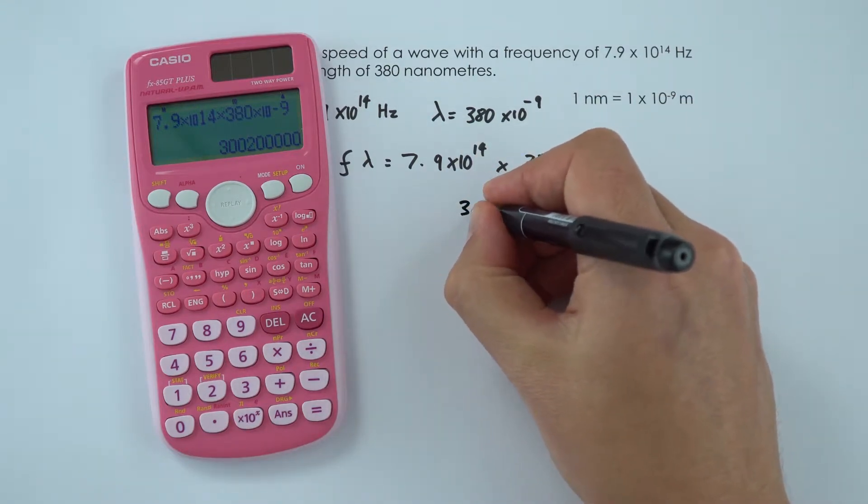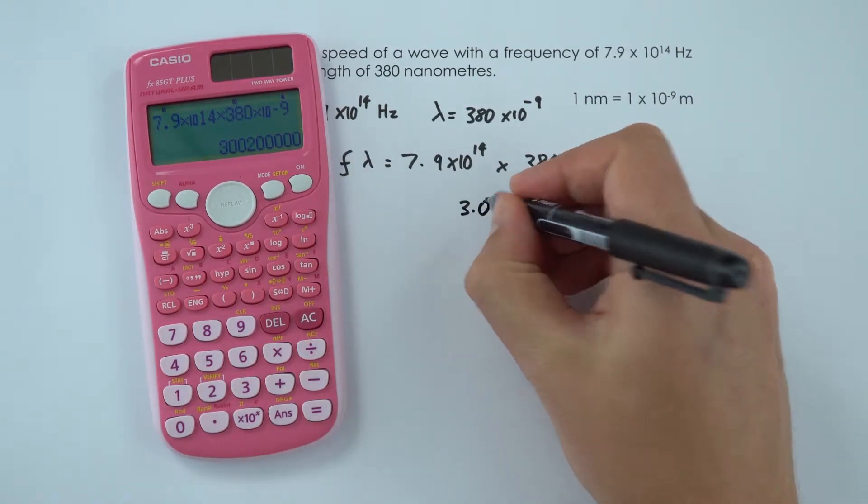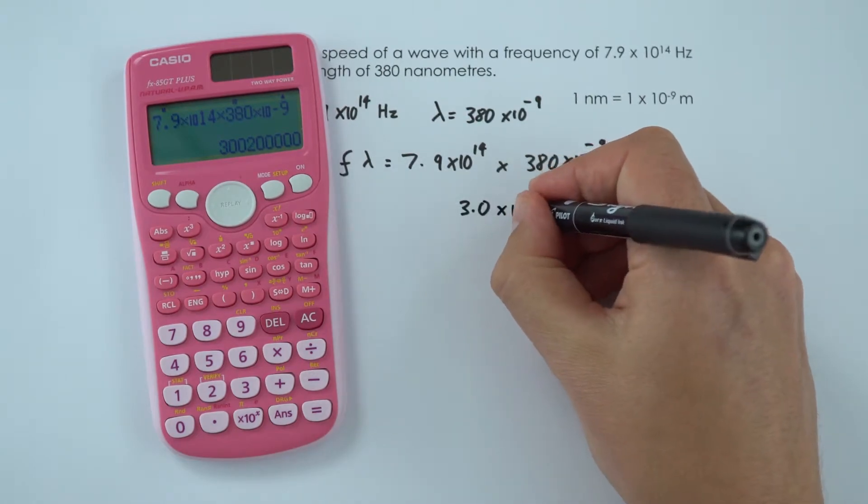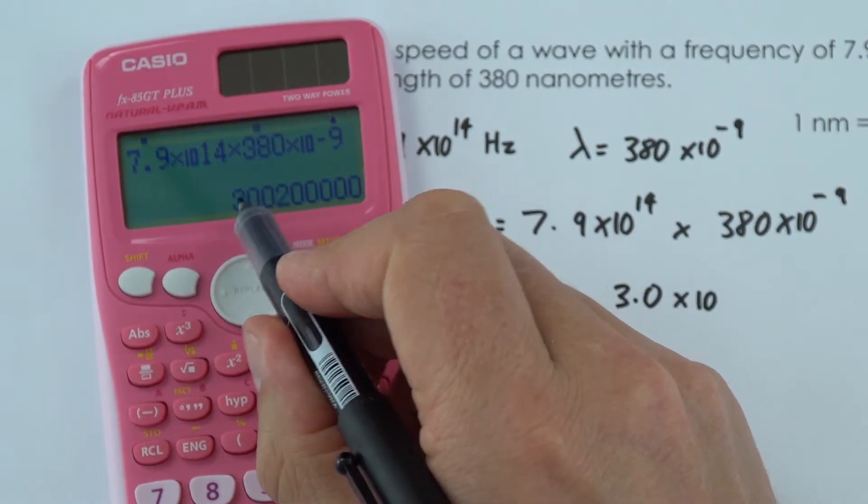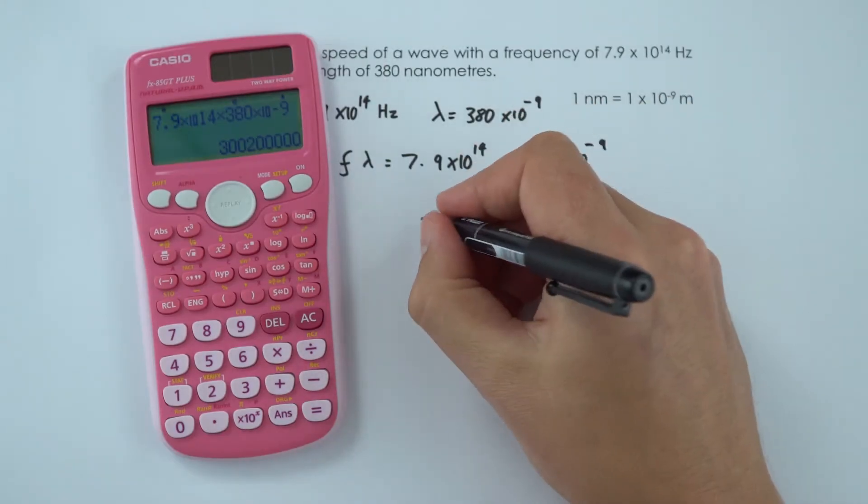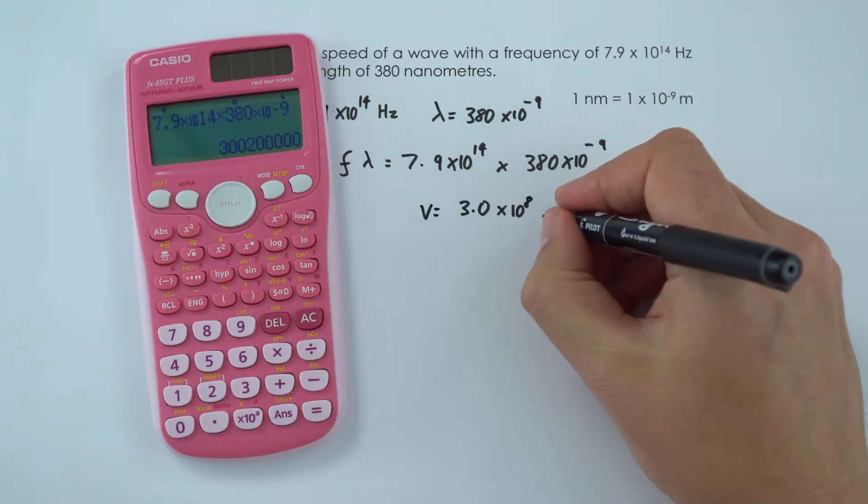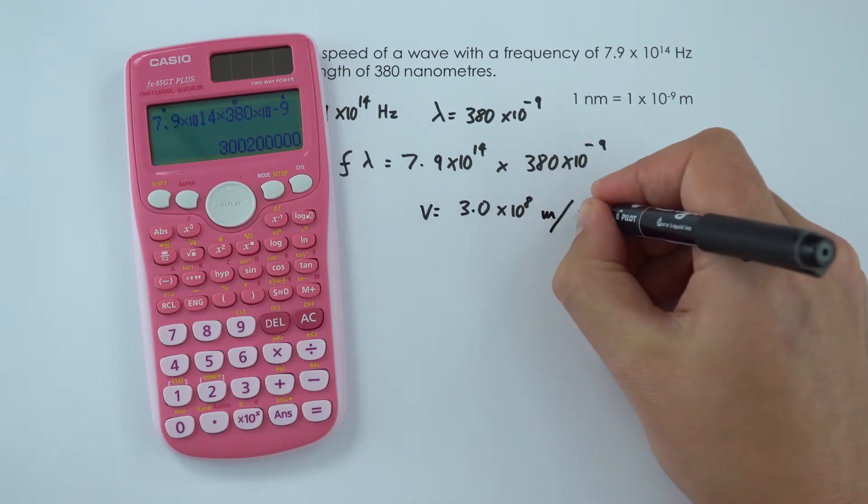So that's equal to 3.0, and then that's raised to the power of 10 to the 1, 2, 3, 4, 5, 6, 7, 8. And because this is our wave speed, the units are metres per second.